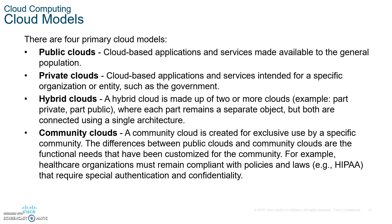Please write down the four primary cloud models. You have the public cloud, where applications and services are made available to the general population. Then there's the private cloud, where cloud-based applications and services are intended for a specific organization. Then the hybrid cloud, which is a mixture of public and private. And finally, community clouds, created exclusively for a specific community — for example, a healthcare organization or a government entity.